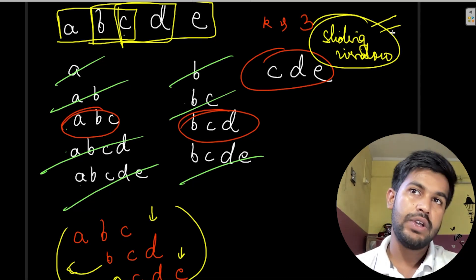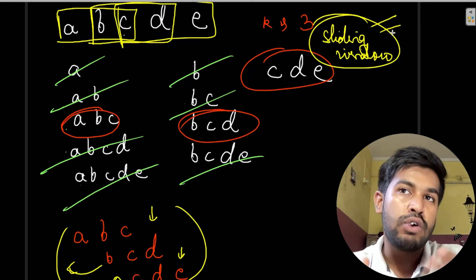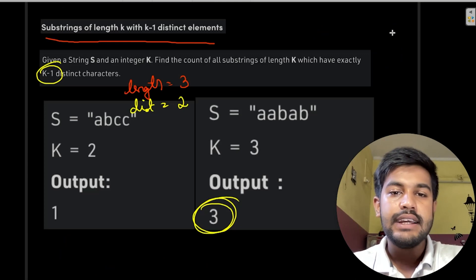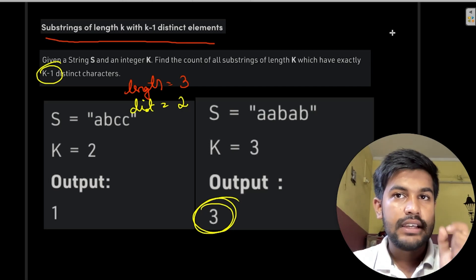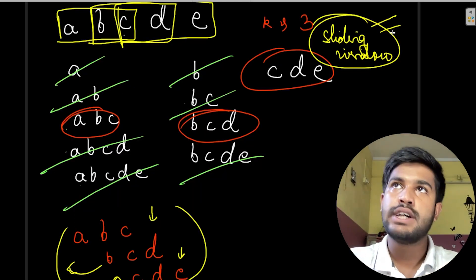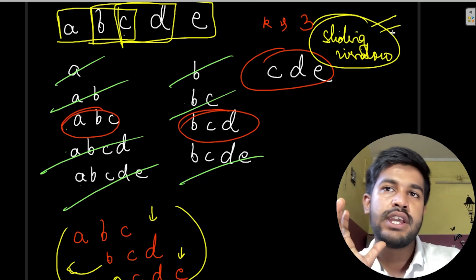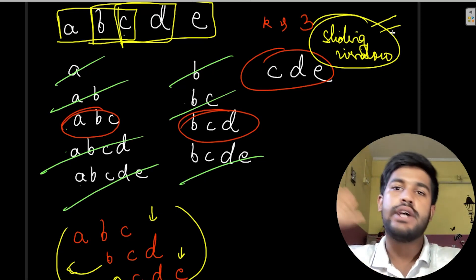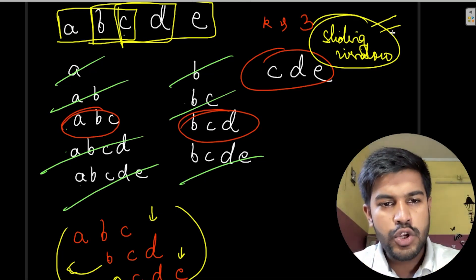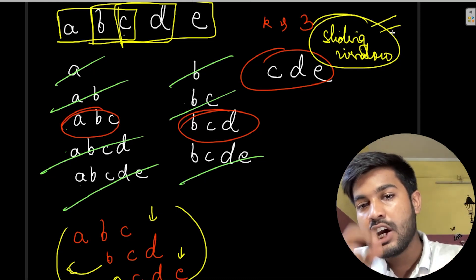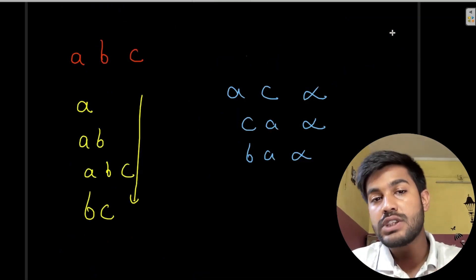This is nothing but a sliding window. If you're an intermediate-level person skipping brute force, here's the hint: when the substring length to be considered is fixed, always think in terms of sliding window first, then move to other algorithms if sliding window is not optimal.